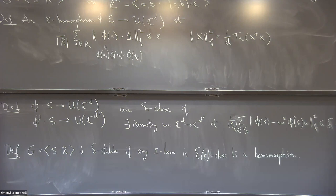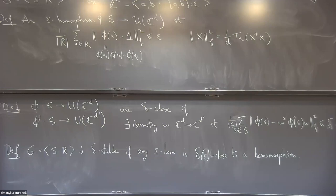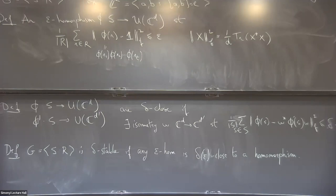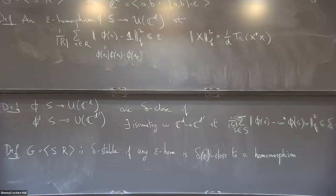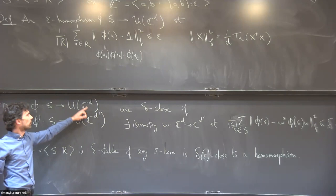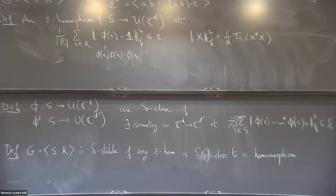Some comments: there are many notions of stability for groups in the literature. Important differences with this notion: the norm considered here is the Frobenius norm — oftentimes the operator norm is used, which makes a very big difference. Oftentimes an epsilon-homomorphism would be a map defined on the whole group approximately respecting the multiplication table. Here I have a weakening because of these averages, appearing both in the assumptions and the conclusions. Also, in the notion of closeness we allow the dimension to vary — this is sometimes referred to as flexible stability.